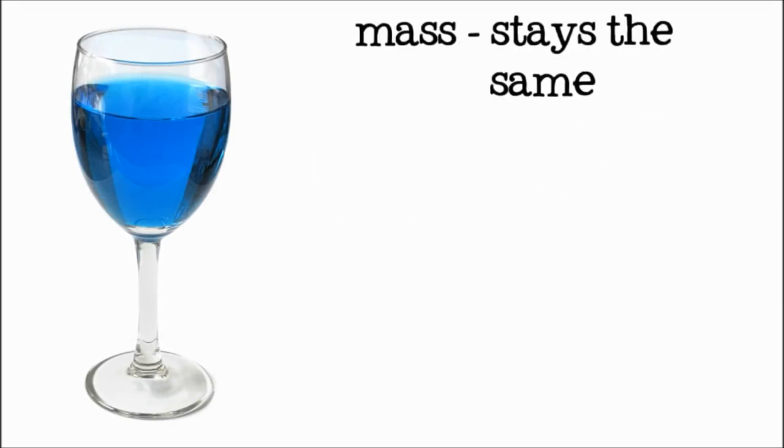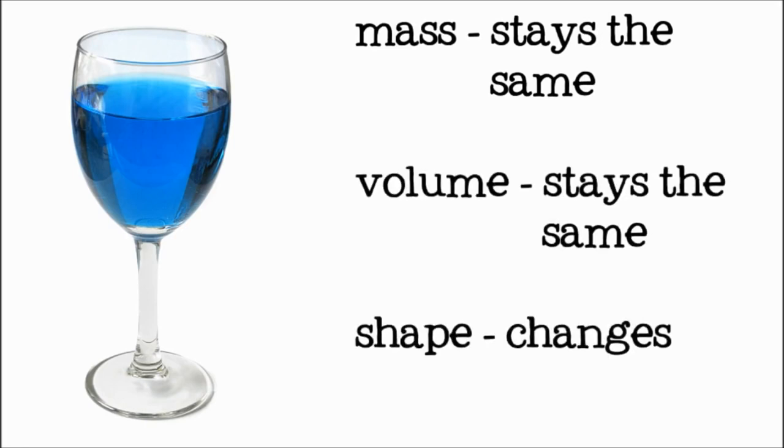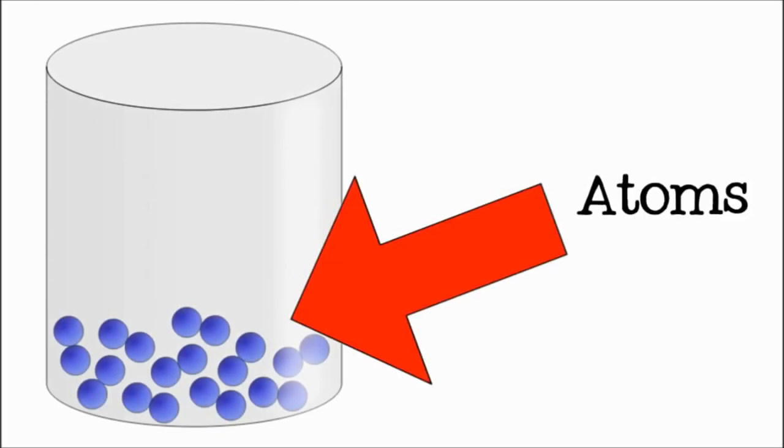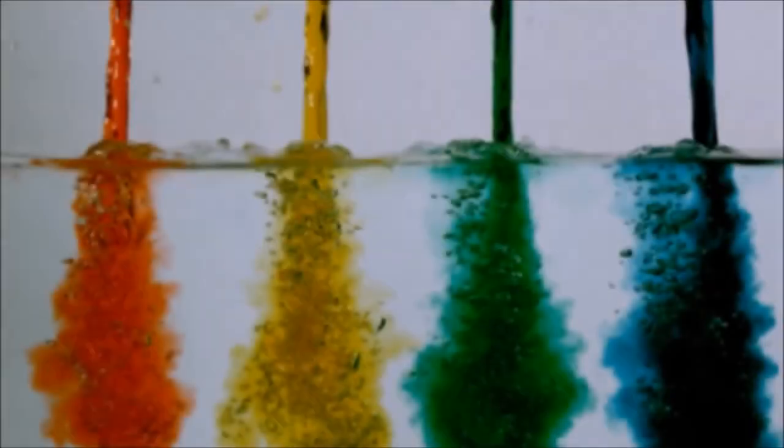Liquid is the next state of matter. Liquids have a definite volume and mass, but they do not have a definite shape. The atoms in liquid are still close together, but unlike the atoms in a solid, they can move around. This allows the matter in a liquid to flow.